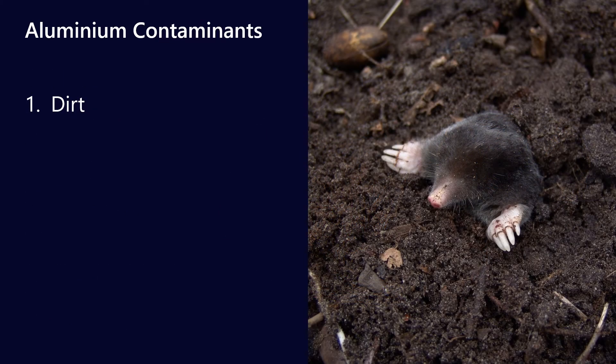Let's talk about contaminants. Dirt is one of the primary ways that aluminium gets in. Dirt is generally a mixture of aluminium and silicon, and you'll see it in the ratio anywhere between 1:2 and 1:12, where the aluminium is always the smaller component. Dirt ingress into a used oil analysis sample can show up as a combination of aluminium and silicon — this is why it's really important that once you've taken the sample, you put the lid back on, because if dirt blows in it will show up as a contaminant.